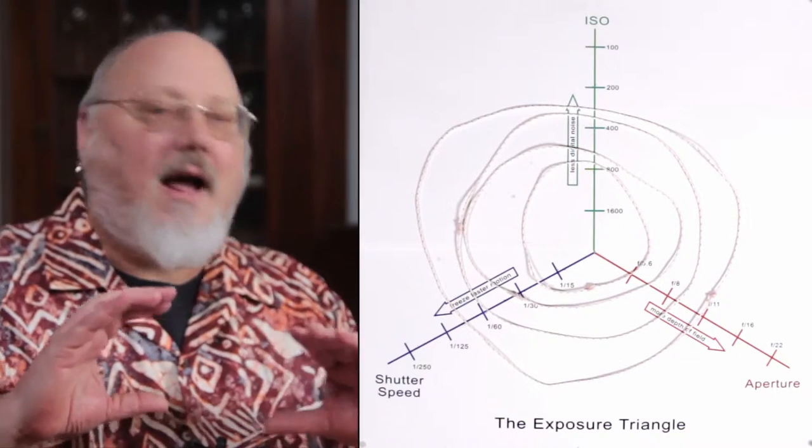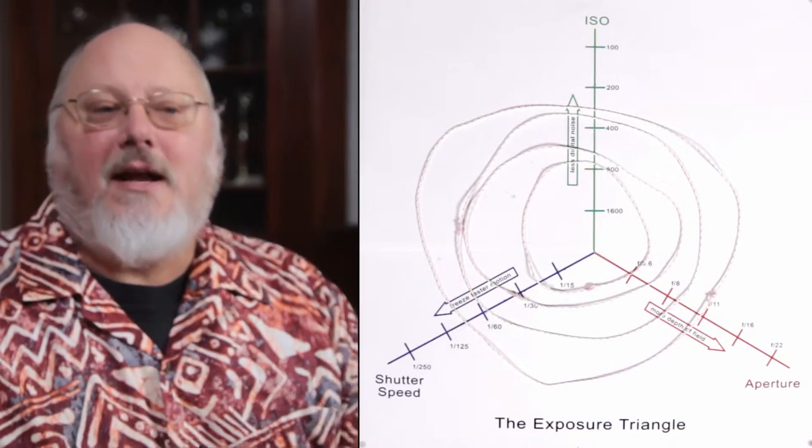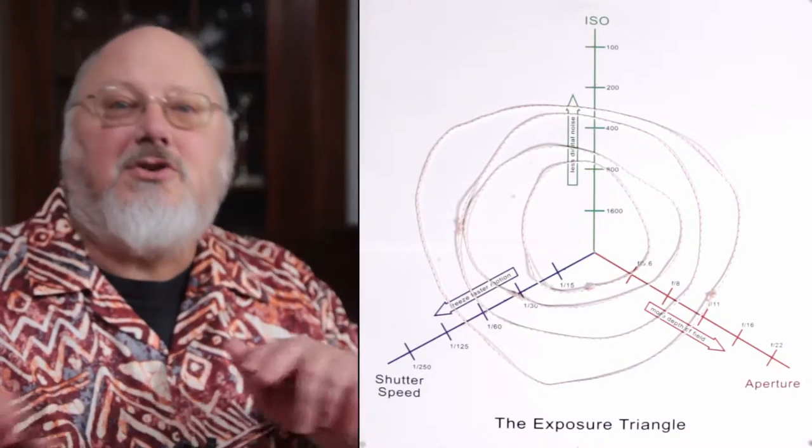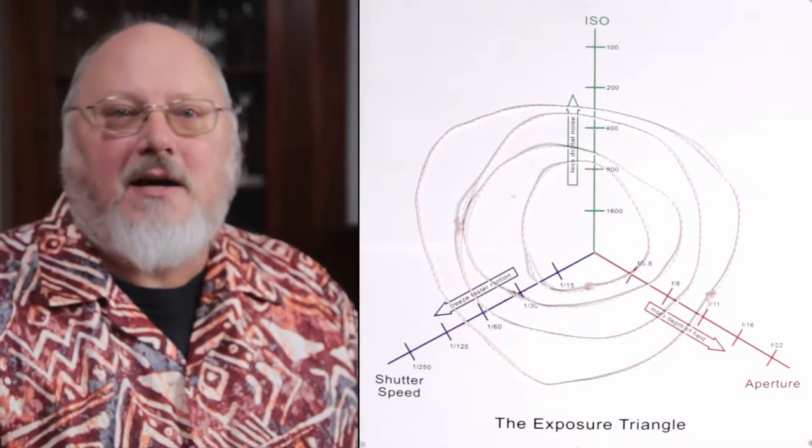So between the shutter speed and the aperture, you adjust how much light comes in at a time and how long that light goes in. So you can balance those two out. You can increase one and decrease the other. And I'll be showing you that on my diagram in just a moment.